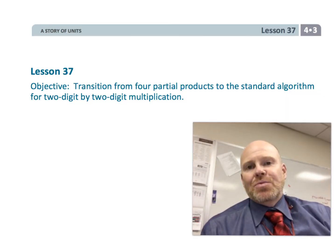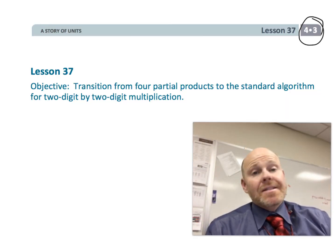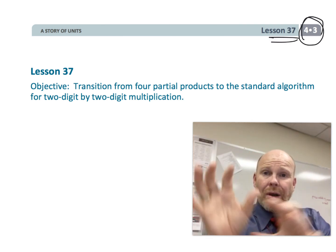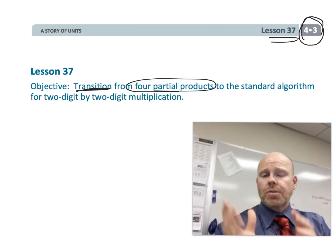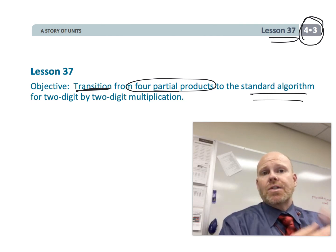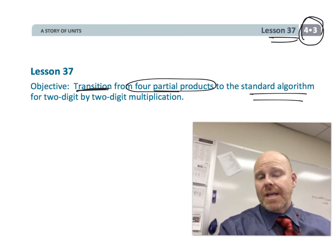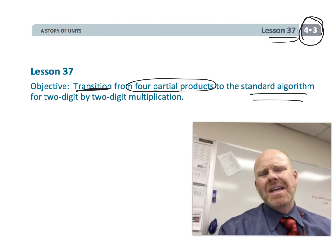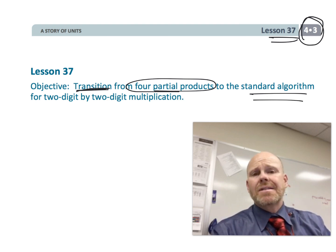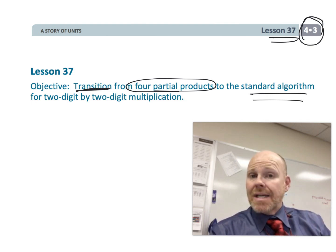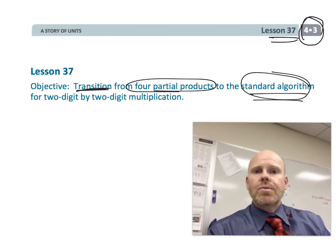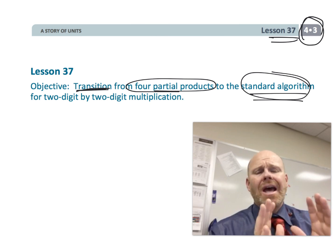This is fourth grade module 3 lesson 37. In this lesson, students are going to be transitioning from the area model, where students come up with four partial products, to the standard algorithm, which really is just two partial products. This lesson is a little clunky in how students are supposed to show their work — it is absolutely not the standard algorithm even though the objective says it is. If students still prefer the area model, go ahead and use it.